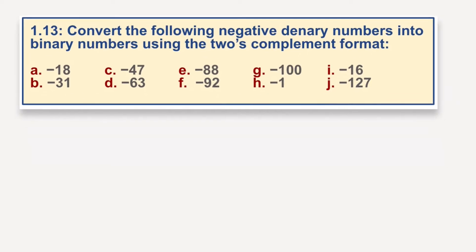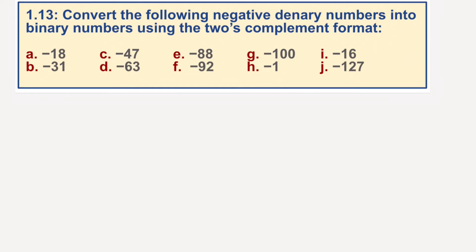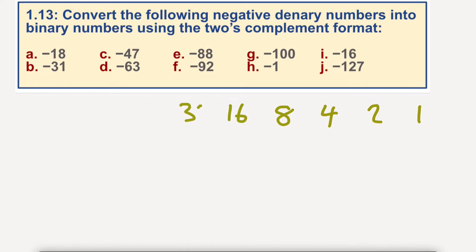How do we do this? Let's have a little look. Like you saw in video 1.12, we're going to set out and create an 8-bit register: 1, 2, 4, 8, 16, 32, 64, 128. But this 128 is a minus number. And because we're working in minus numbers, if it's a negative number, it always has a 1 here to represent negative numbers.